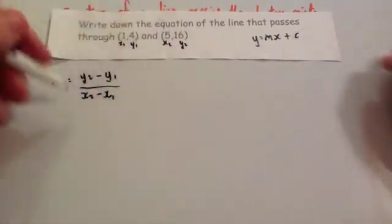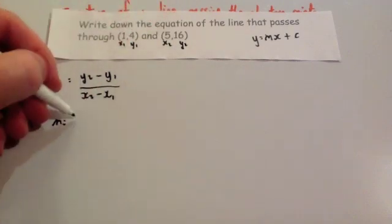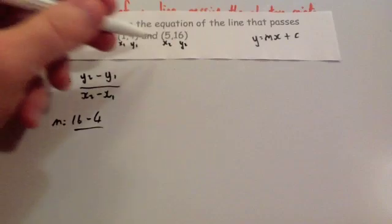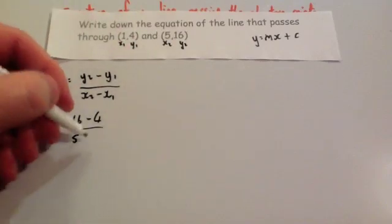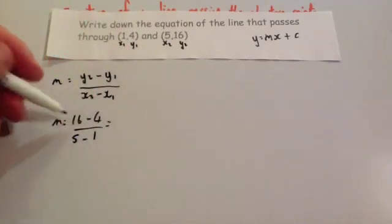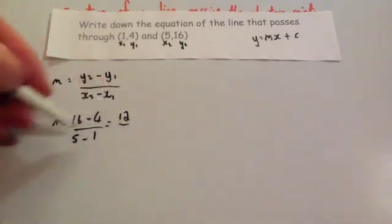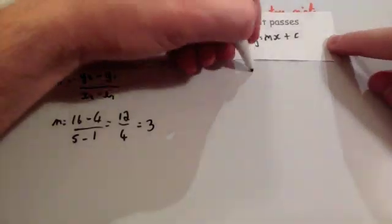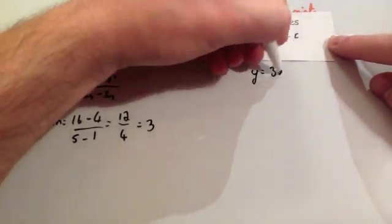So let's substitute them in. So you're going to get m equals 16, subtract 4, divided by 5, subtract 1. That gives you 12 divided by 4, which equals 3. So the gradient is equal to 3. So you're going to get y equals 3x plus c.